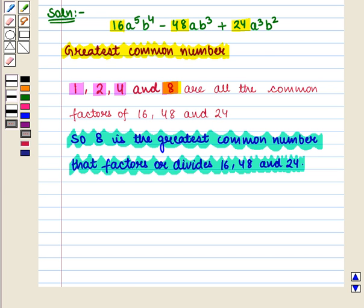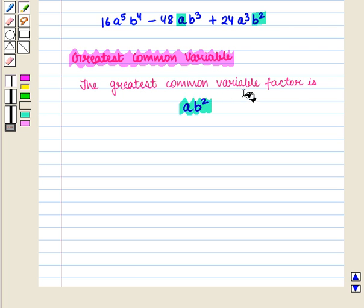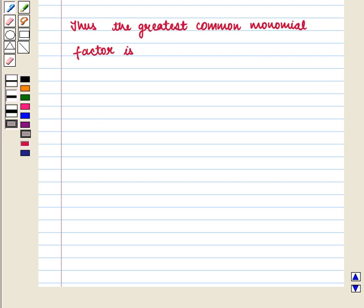We see that 8 is the greatest common number that factors or divides 16, 48, and 24, and ab square is the greatest common variable factor. Thus the greatest common monomial factor is 8 into ab square, that is 8ab square.